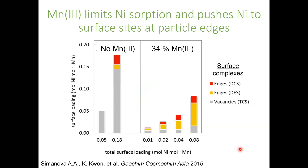To summarize: when we don't have Mn(III) in the structure, nickel forms primarily surface complexes at the vacancy sites. When we have a Mn(III)-rich material, we have partitioning of nickel to the particle edges in a range of different geometries — corner-sharing and edge-sharing geometries.